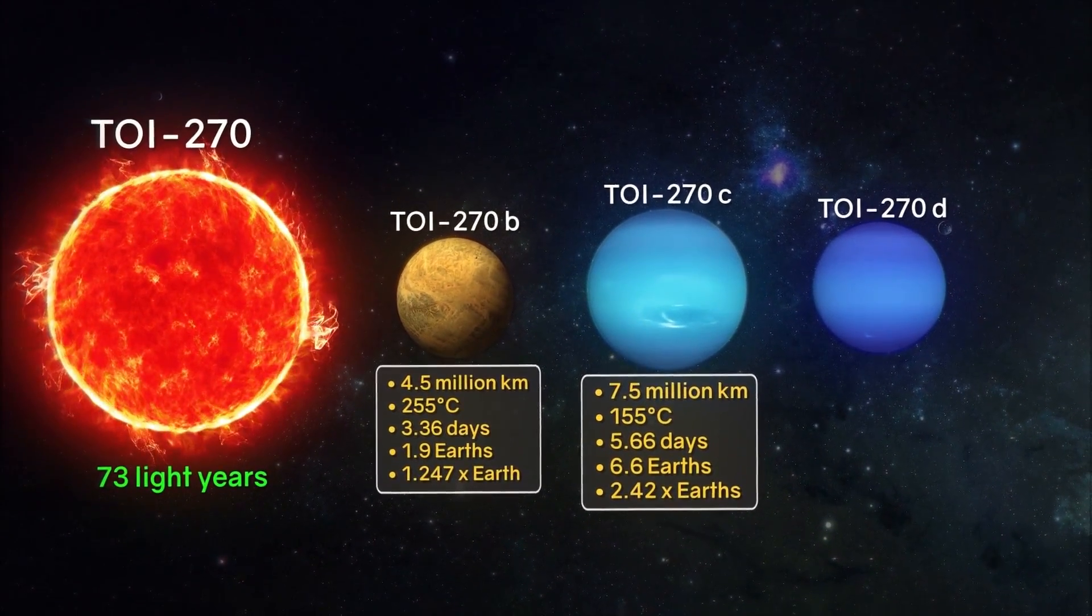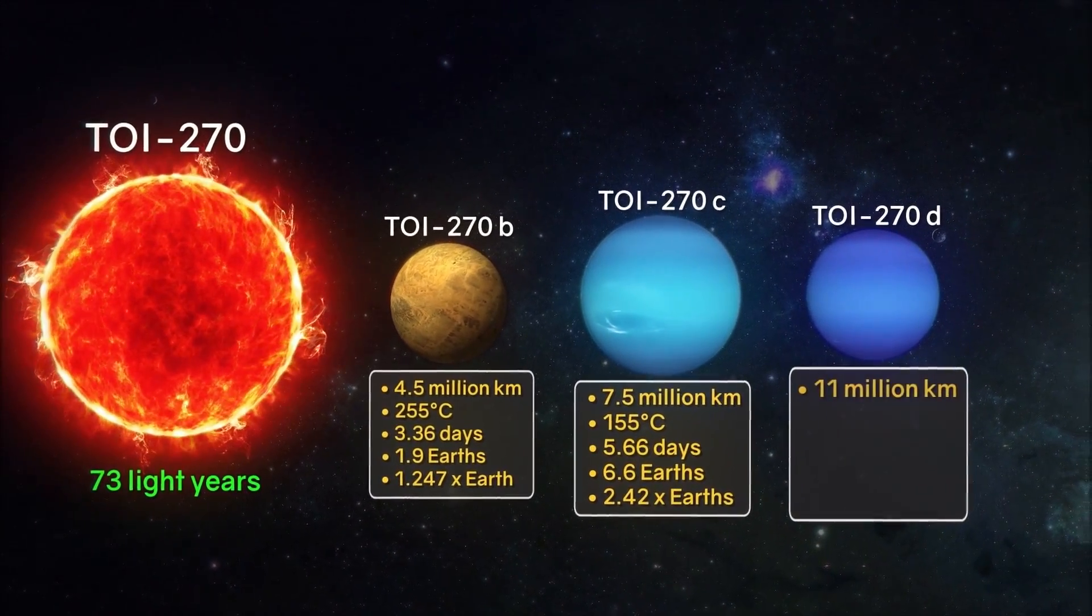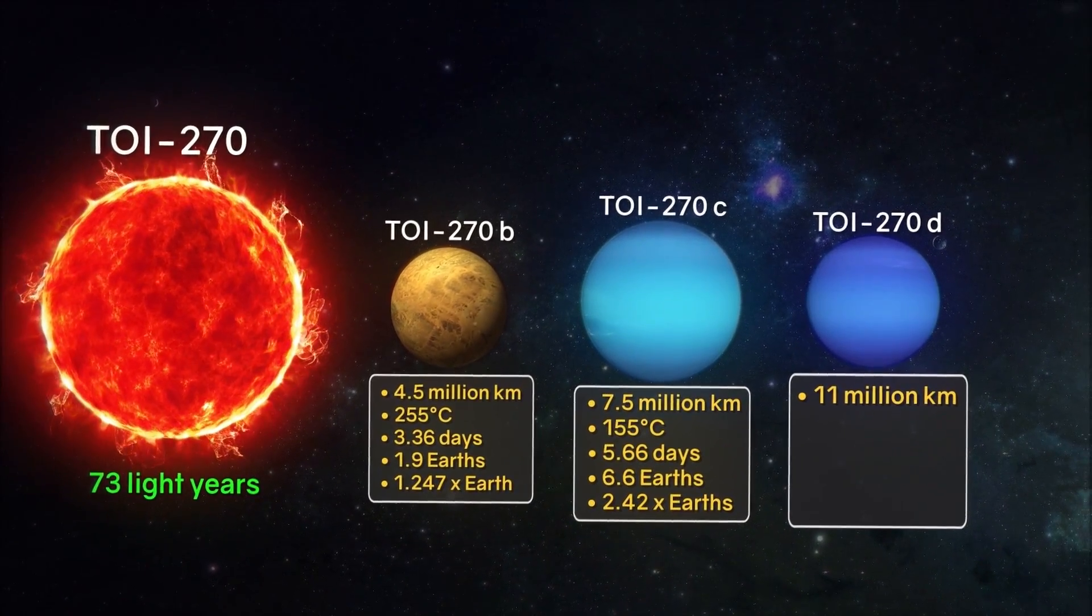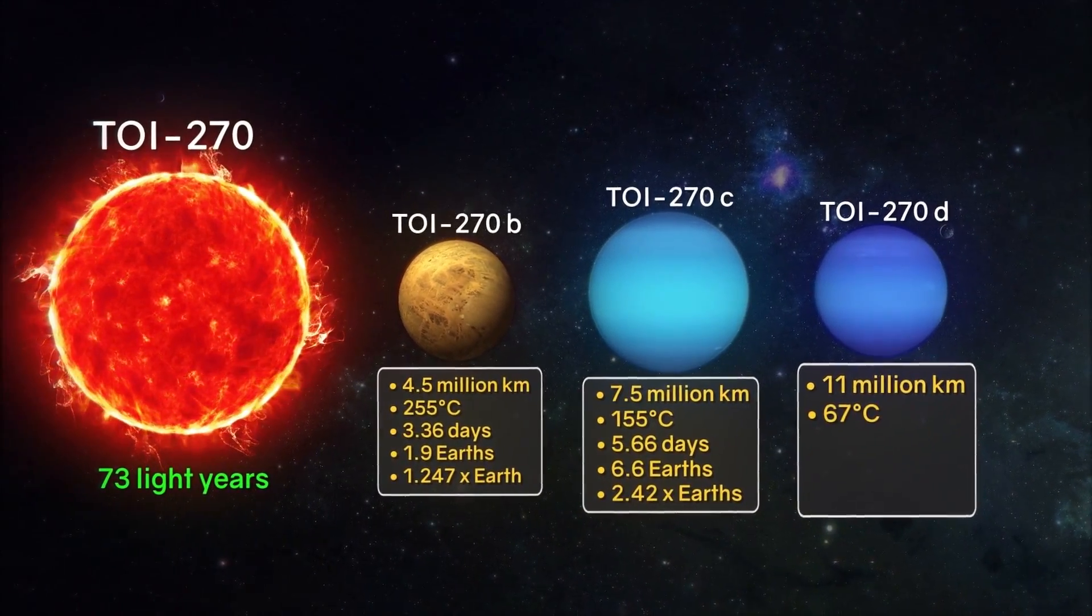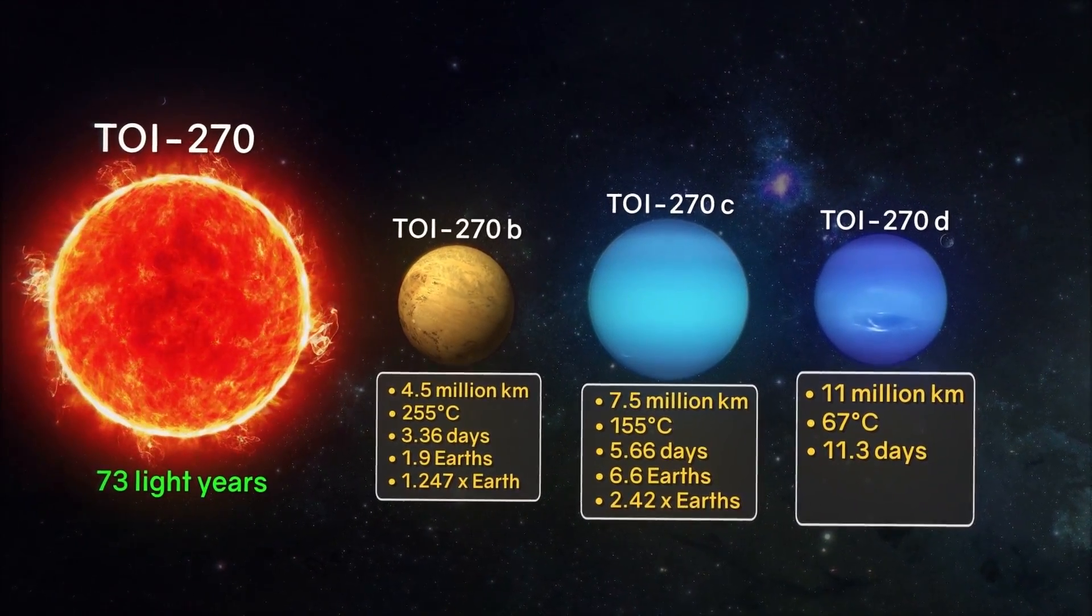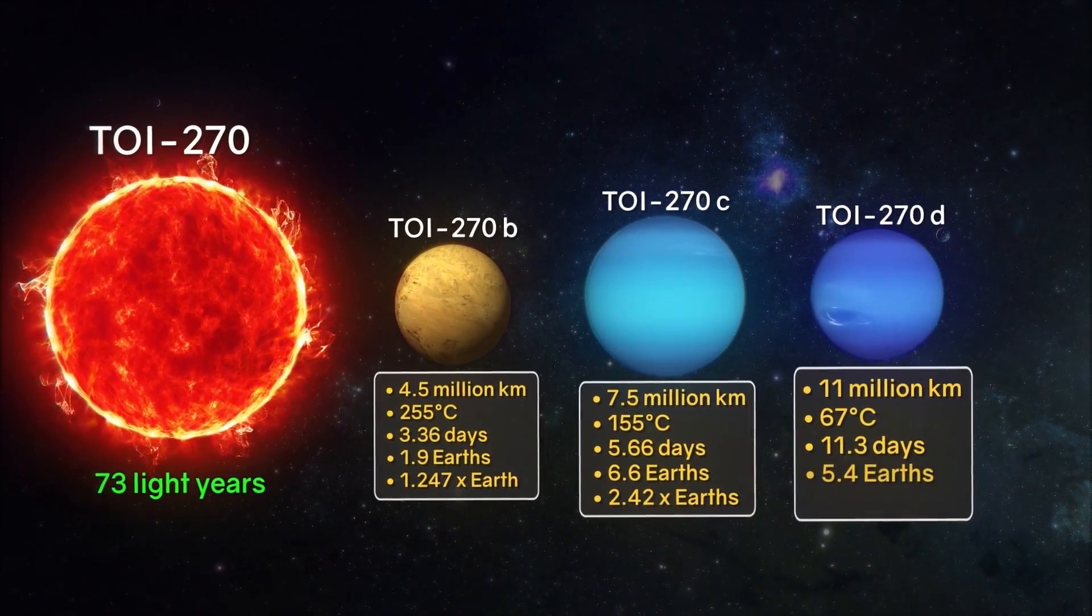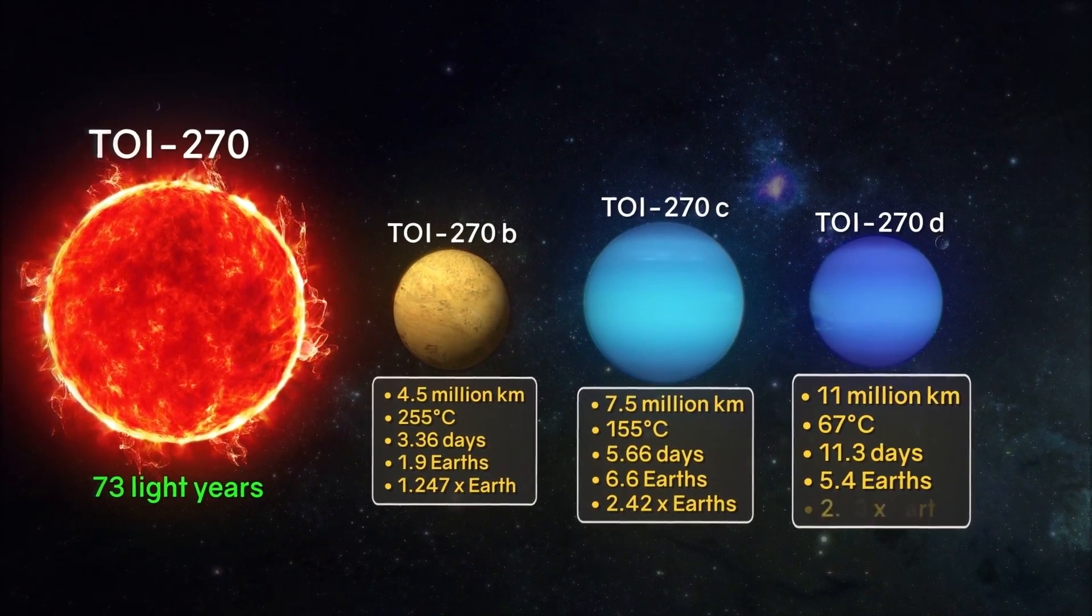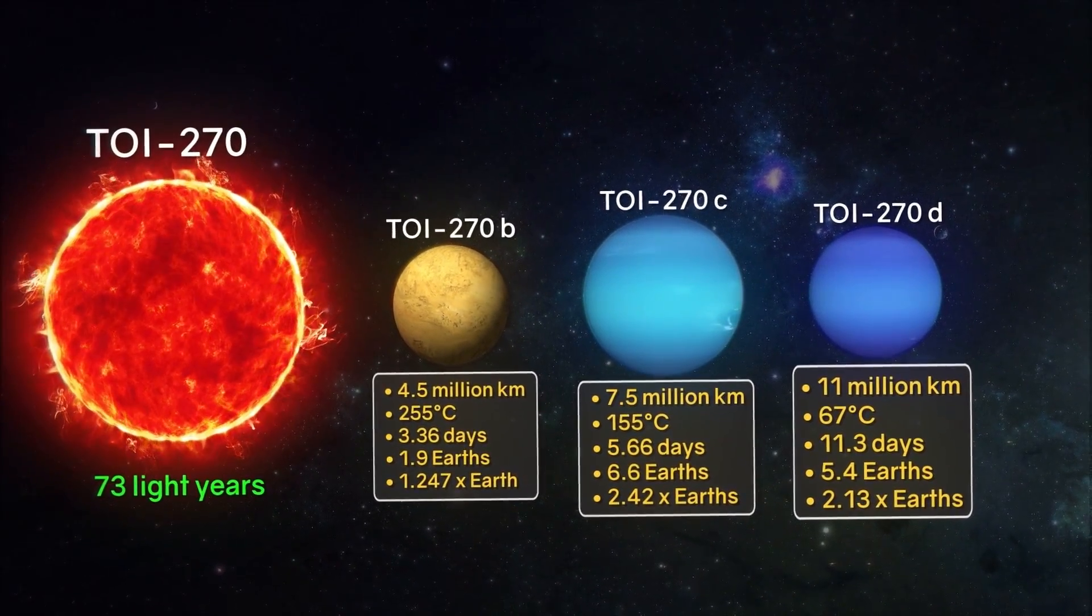Exoplanet TOI-270 d: the distance to the star is about 11 million kilometers. The average surface temperature is 67 degrees Celsius. The period of rotation around the star is 11.3 days. The mass is about 5.4 times that of the Earth. Size 2.13 times the size of the Earth.